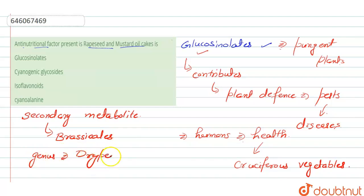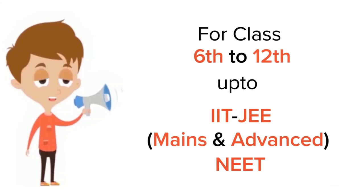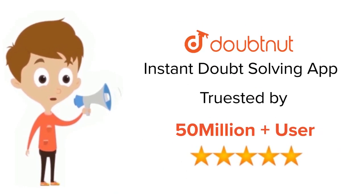Cyanogenic glycosides, isoflavonoids, and cyanoalanines — all three are absent in rapeseed and mustard oil cakes. So the right answer for this question is option number one. Thank you. For class 6–12, IIT JEE and NEET level, trusted by more than 5 crore students — download DoubtNut today.